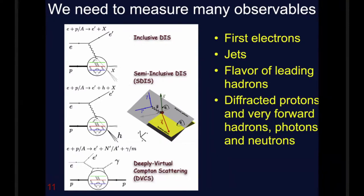Trying to measure all these physics processes means we have to do lots of different things. We have to measure first electrons, and I'm missing Boris on this. We certainly have to measure jets over a very wide range. We have to try to tag leading hadrons, a flavor charm, strange, charm or bottom hadrons and also look for diffractive protons, very forward hadrons, photons and neutrons to try to tag diffractive processes.